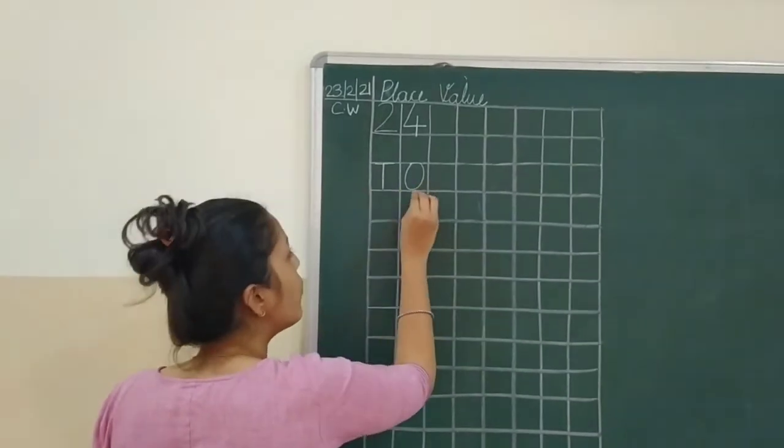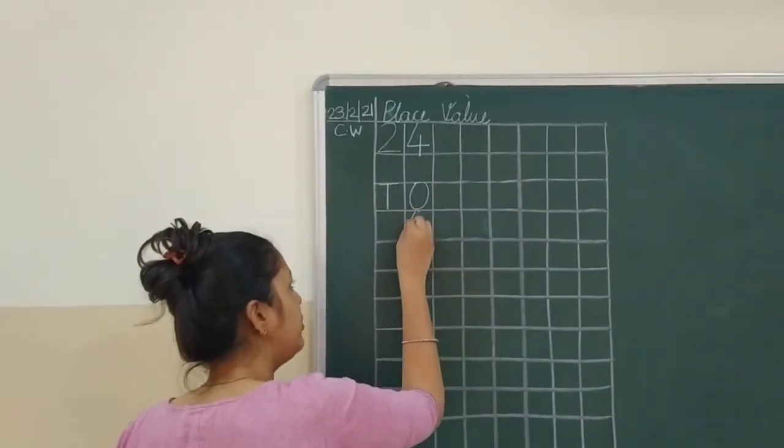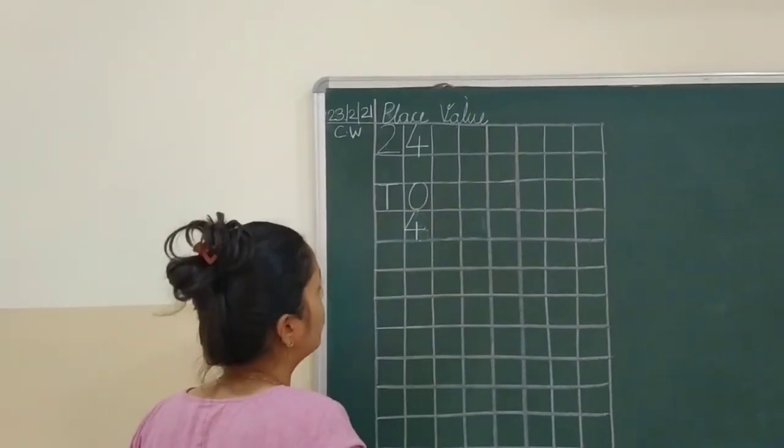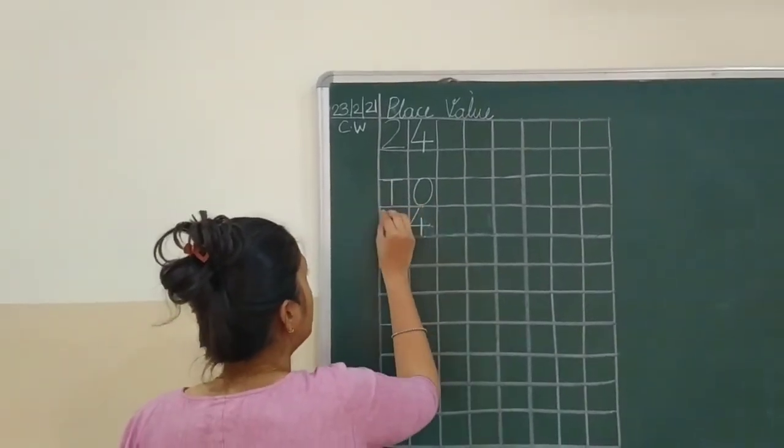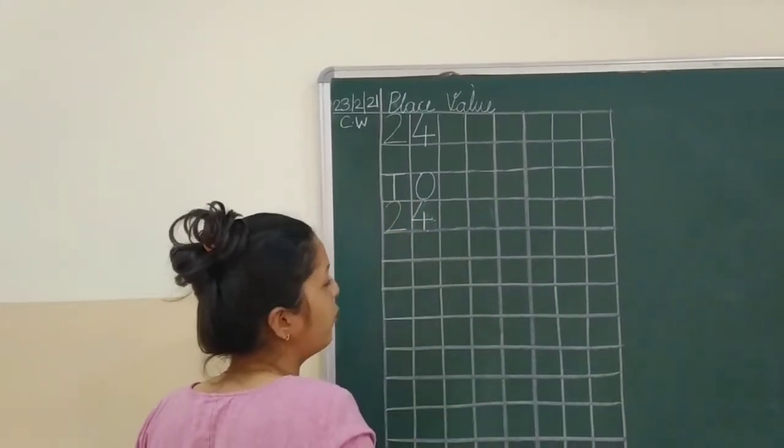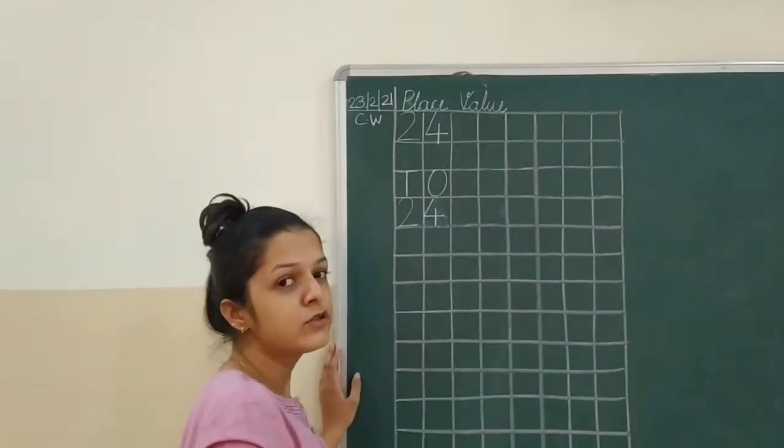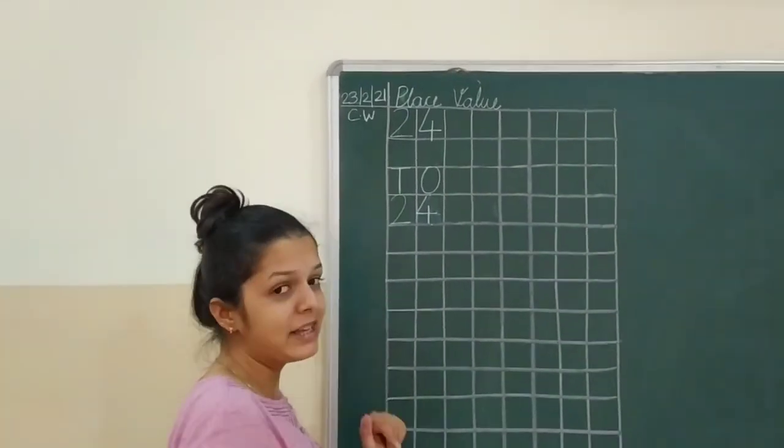Tens, ones. Okay, so we are going to write 4 on the place of ones. Okay, and 2 on the place of tens. 2, 4, 24. Ones, tens. Okay, so this is place value.